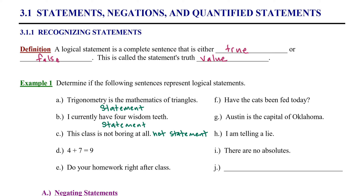The sentence doesn't necessarily have to be an English sentence in order to qualify as a statement. For example, 4 plus 7 equals 9 is an example of a mathematical sentence. If you look closely, you understand 4 plus 7 is not equal to 9 — it's a false equation, an expression of something that is false. But remember, a statement is something that is either true or false, so this does qualify as a logical statement.